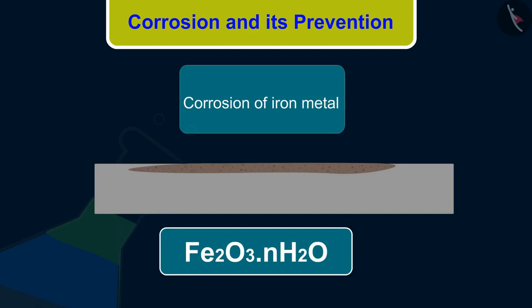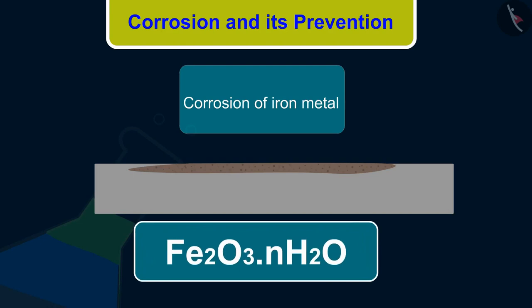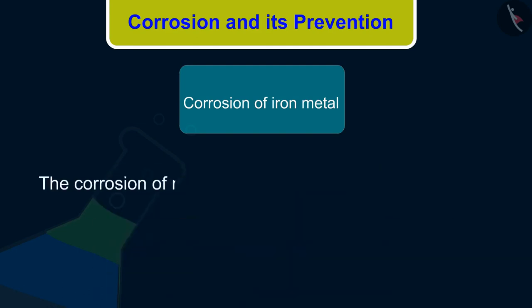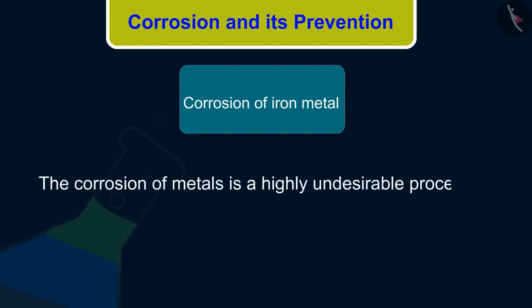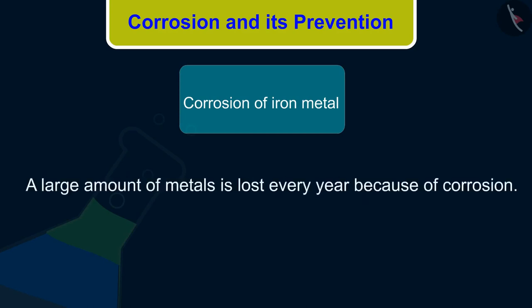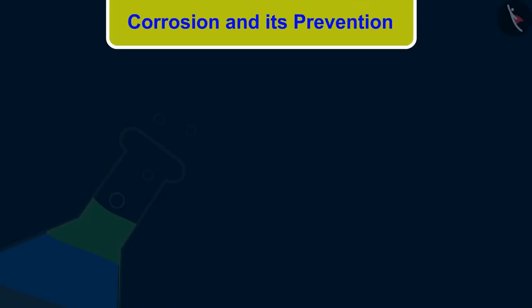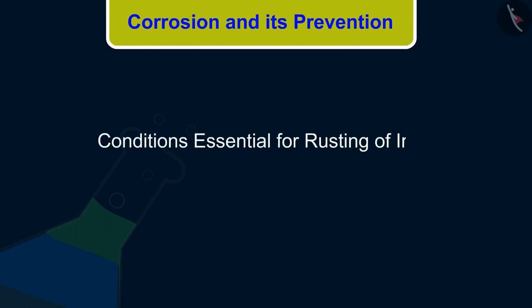During rusting of iron, iron metal combines with oxygen in air in the presence of water to form hydrated iron(III) oxide, Fe2O3·H2O. The corrosion of metals is a highly undesirable process. A large amount of metals is lost every year because of corrosion. We will now discuss an activity to discover the conditions essential for rusting of iron.